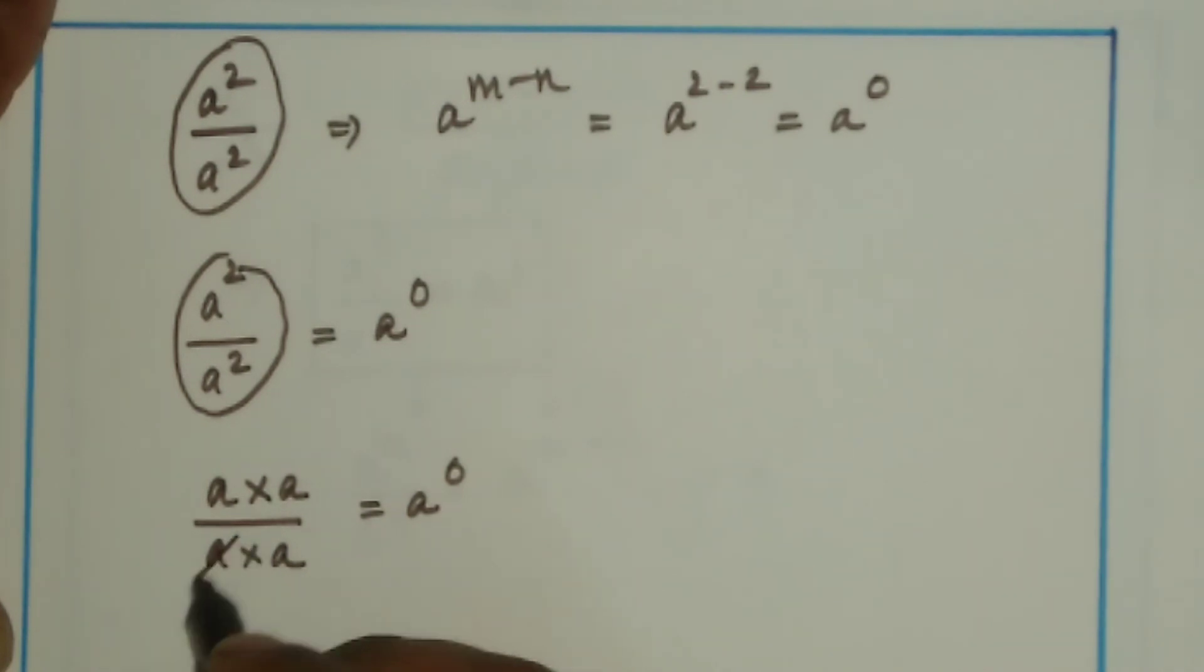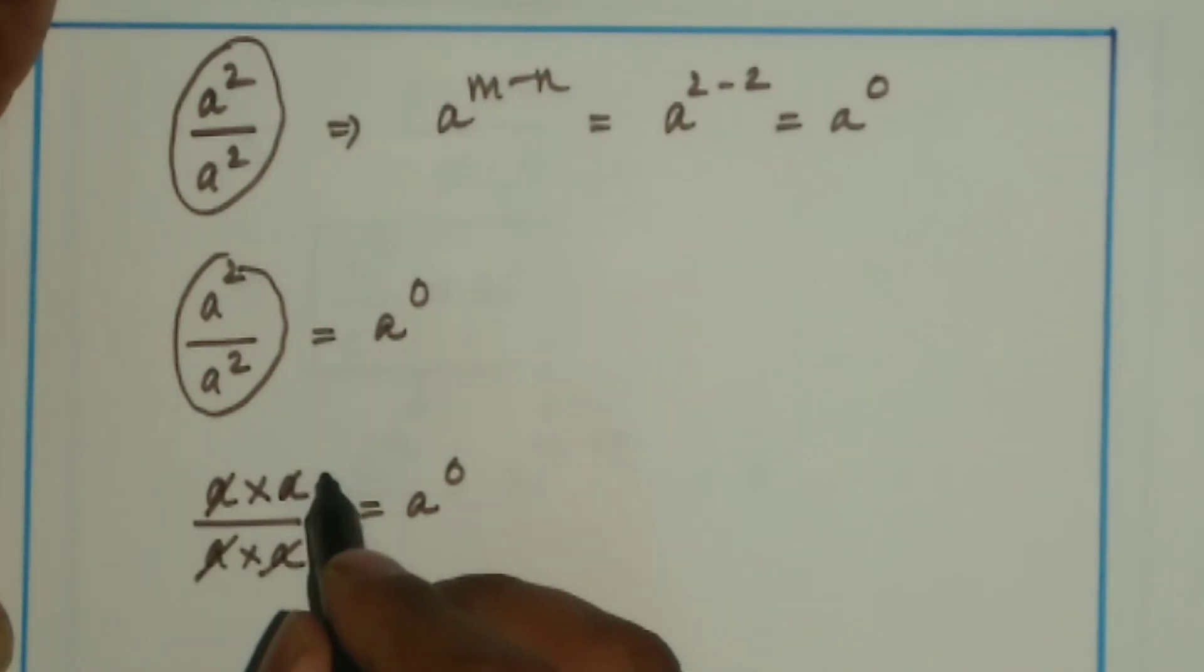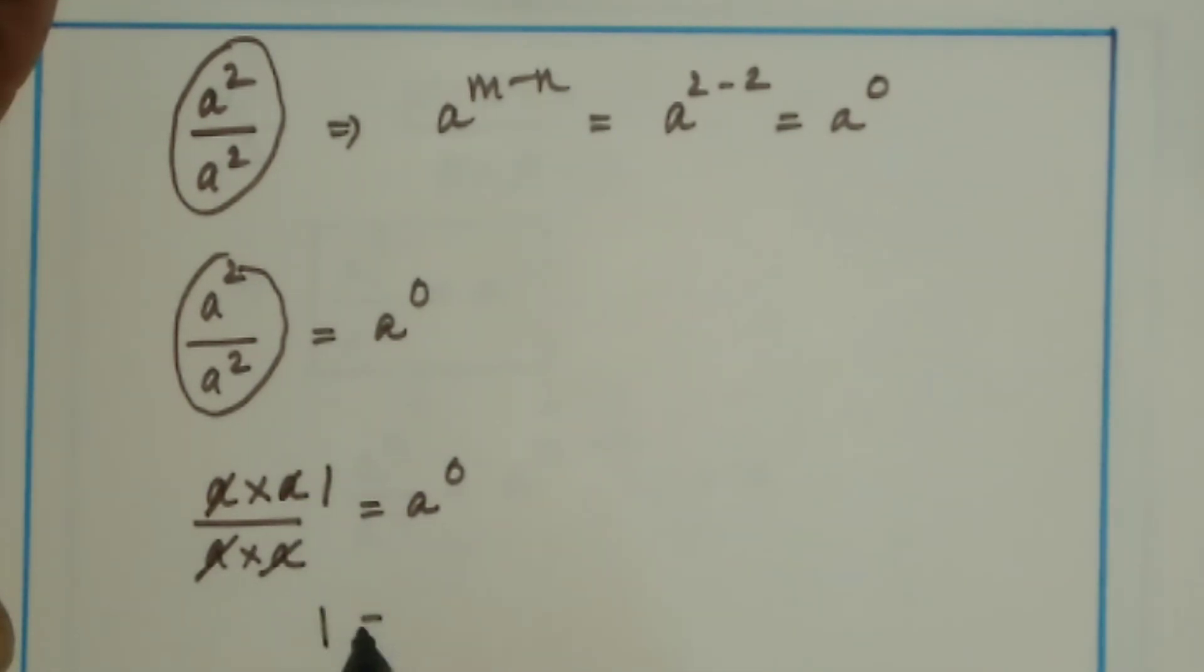And finally, on cancellation, I get 1 on the left-hand side. That means 1 is equal to a power 0, or a power 0 is equal to 1.